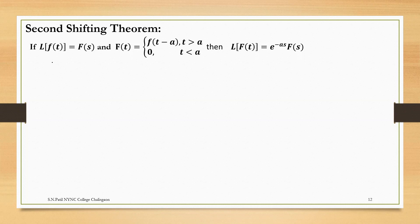So what is the second shifting theorem? If the Laplace transform of f(t) is F(s), and capital F(t) is defined as f(t minus a) when T is greater than a, and 0 when T is less than a, then the second shifting theorem concerns shifting on the T-axis — the replacement of T by T minus a. Then the Laplace transform of capital F(t) is e raised to minus a·s into F(s).